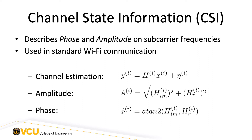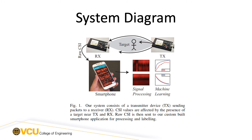Each sub-carrier frequency is affected slightly differently in an environment, so typically we will see something like 64 sub-carrier frequencies used. For our work, we developed a system for collecting CSI onto an off-the-shelf smartphone device for use in Wi-Fi sensing and localization.